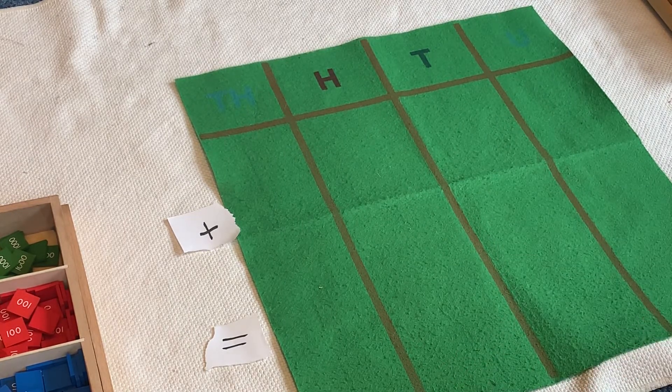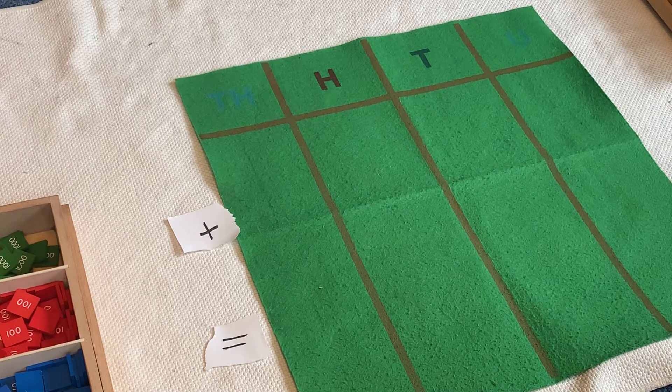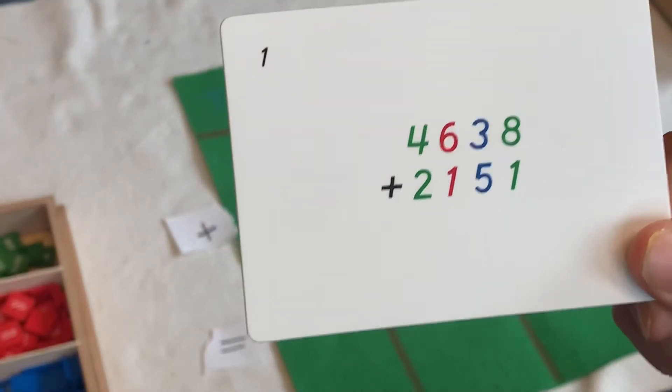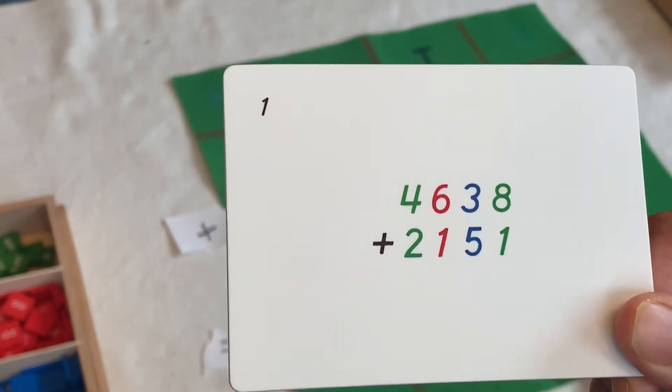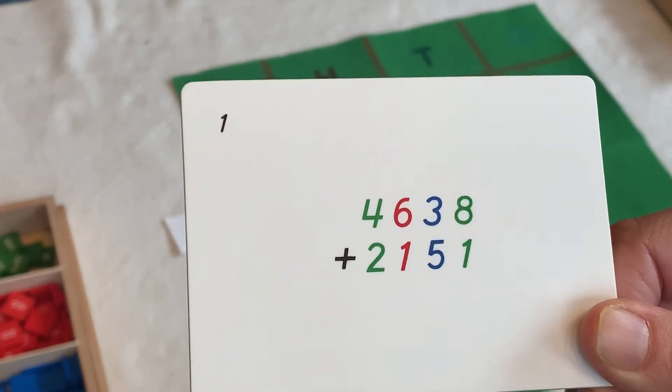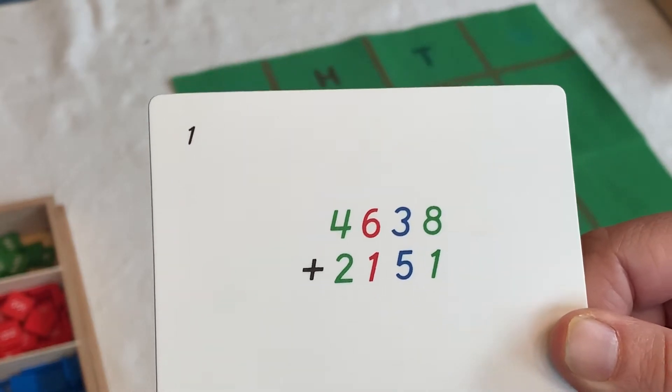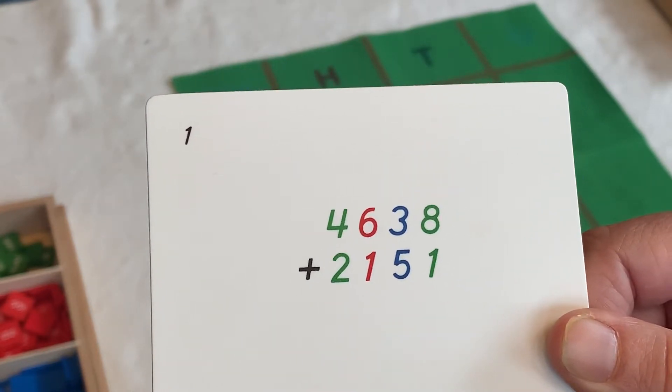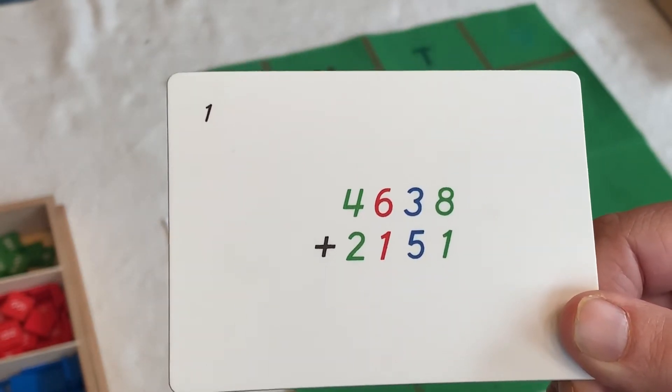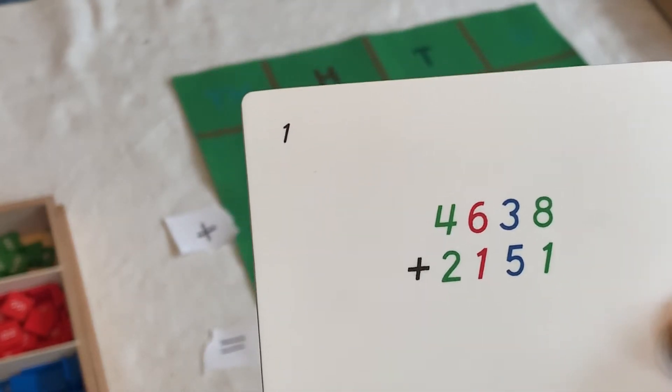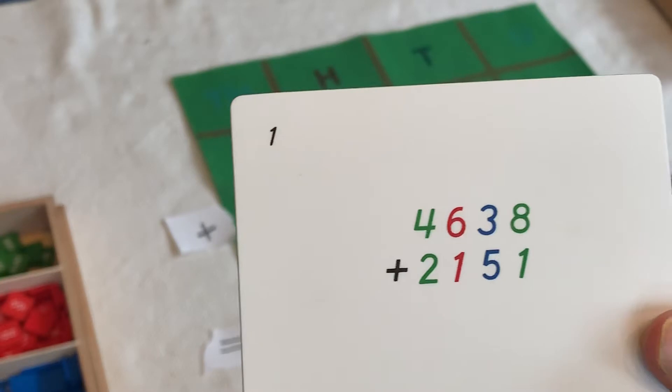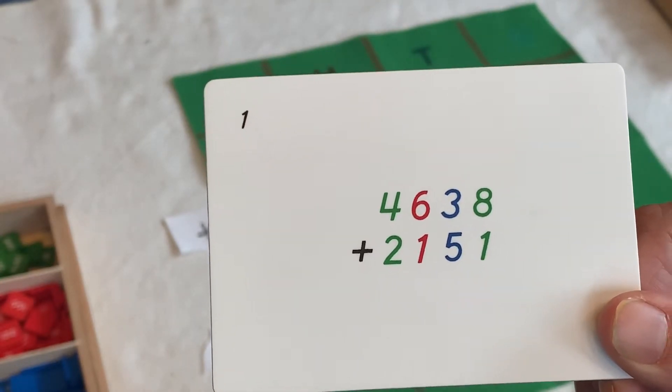Okay, so we're going to do a static addition problem, and this is it right here. This is the one we did via Zoom this morning. I know some of you weren't able to join us. We're definitely learning how to work out all the kinks in our Zoom meetings, but we will get them figured out. Okay, so today we're going to do 4,638 plus 2,151.